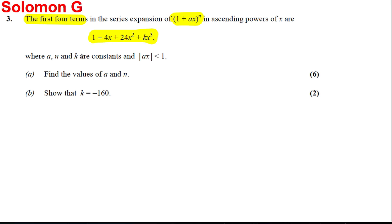Where A, N, and K are constants and the modulus of AX is less than 1. Find A and find N. OK, well, firstly, let's write down what the binomial theorem is.